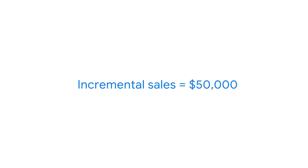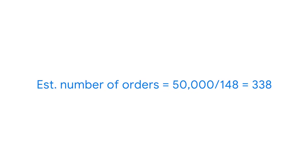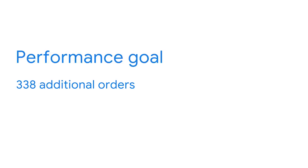First, determine how many more orders need to be placed to generate an additional $50,000 in incremental sales. For this calculation, you can use the average order value, or AOV. AOV is the sum of individual order amounts divided by the number of orders. Assuming the AOV is $148, divide the target incremental sales of $50,000 by the average order value of $148 to get the number of additional orders — 338. So the performance goal is an additional 338 orders.